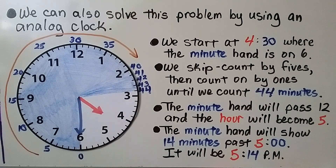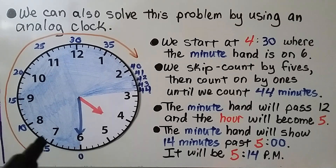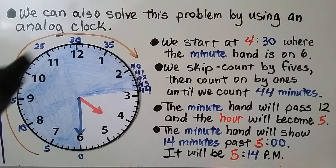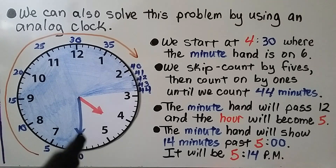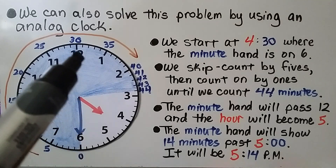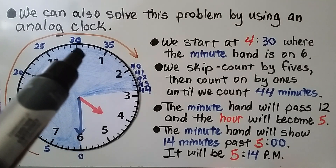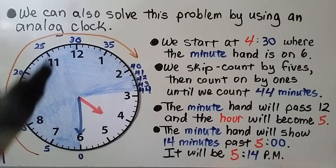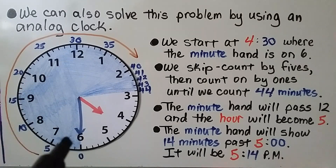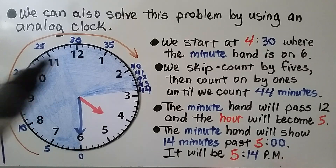We can skip count by fives going around, or we can go straight to the 12 and say that's 30 minutes — we know that's a half hour.